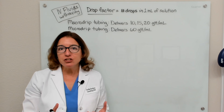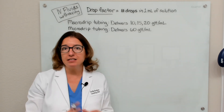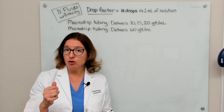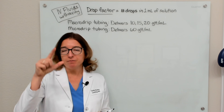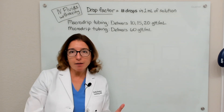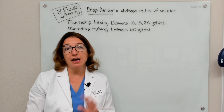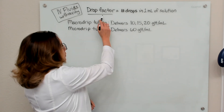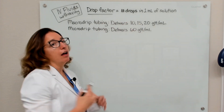Regulation of flow rate when you use gravity is done by using the roller clamp on the IV tubing and watching the drops in the drip chamber. In order to calculate the drops per minute, you need to know the drop factor of the IV tubing that's being used. Drop factor is the number of drops in one ml of solution.